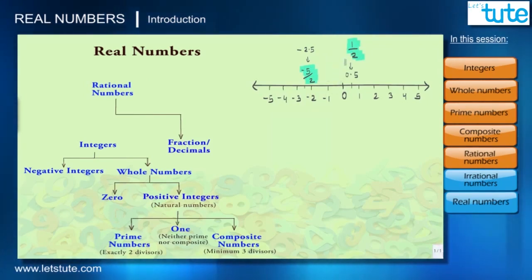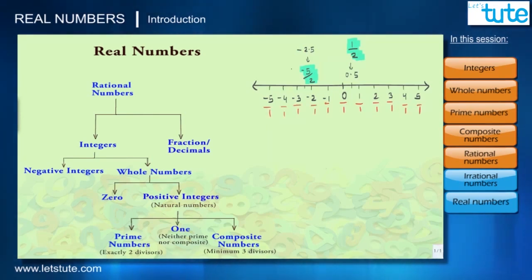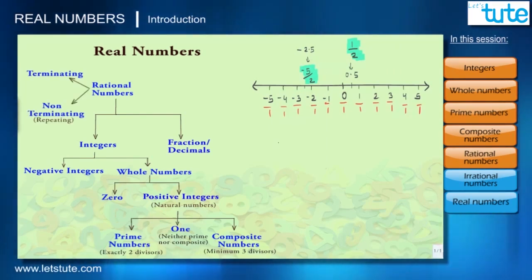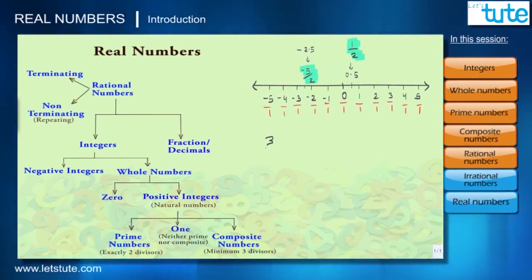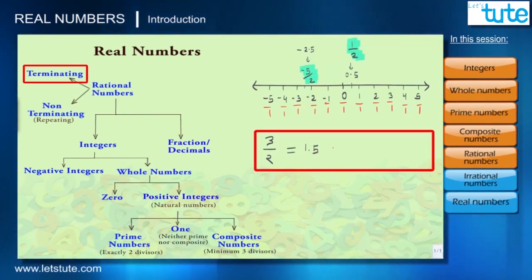Note that every integer is also a rational number, as we can write 0 as 0/1, 1 as 1/1, 2 as 2/1, and so on. Rational numbers can also be written in decimal form, and this decimal form can either be terminating or non-terminating. For example, 3/2 is a rational number and its decimal form is 1.5, which terminates at 5, so this is called a terminating decimal.